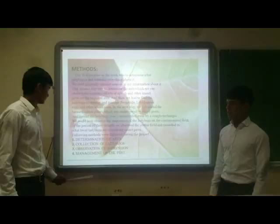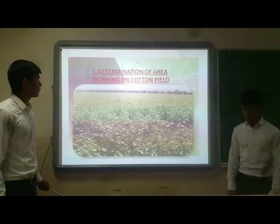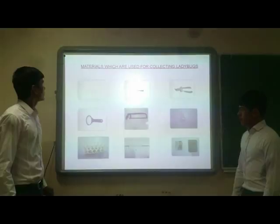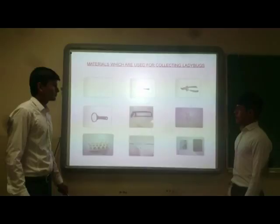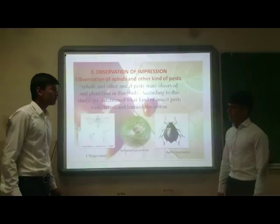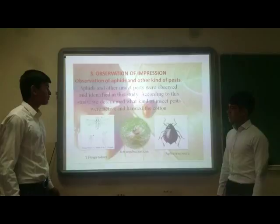In the first method, determination of area, we read and worked on the cotton fields. In the second method, collection of ladybugs, we determined and learned more about ladybugs, and these are the materials used for collecting them. We used nets in the Z method and S method. In the third method, observation of impression, we determined which kinds of insects are active and harmful for cotton plants.